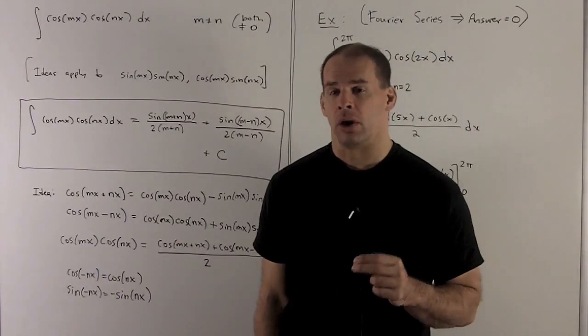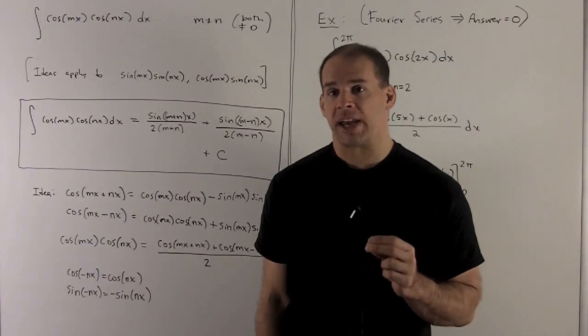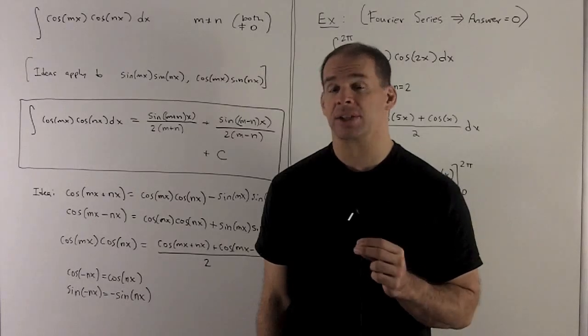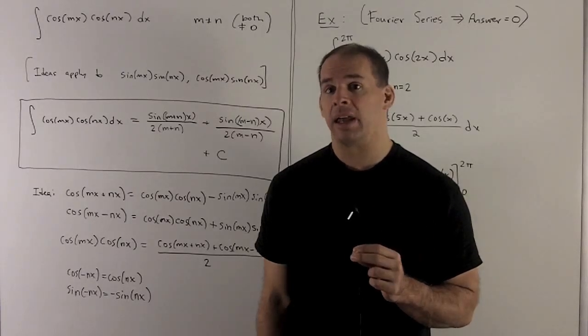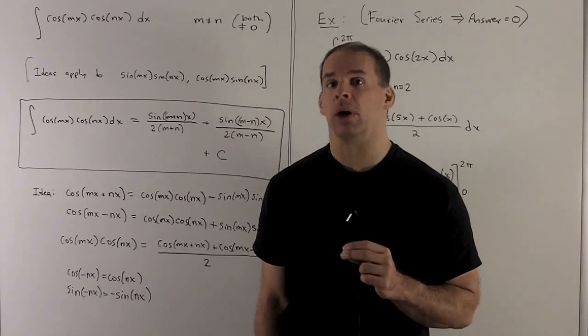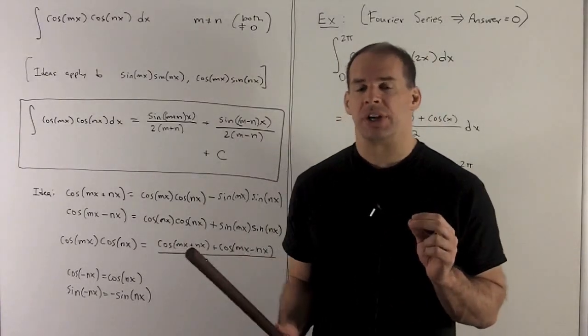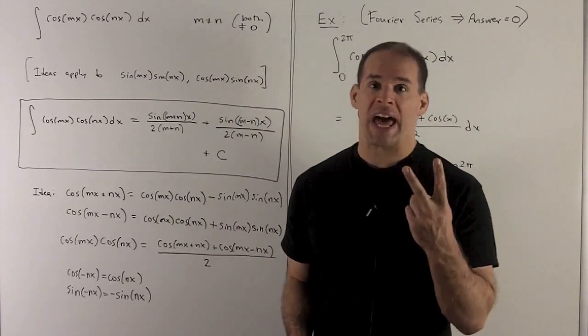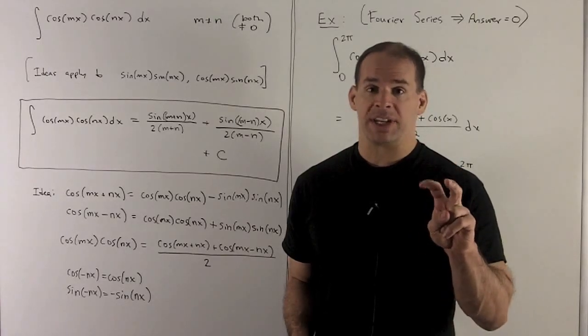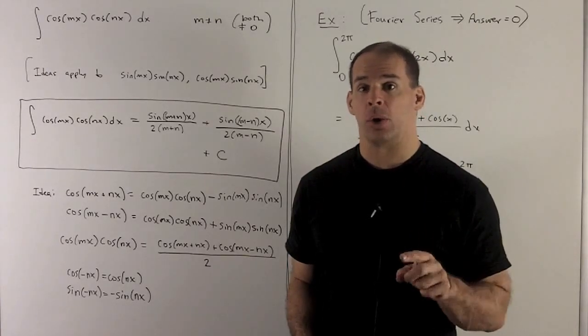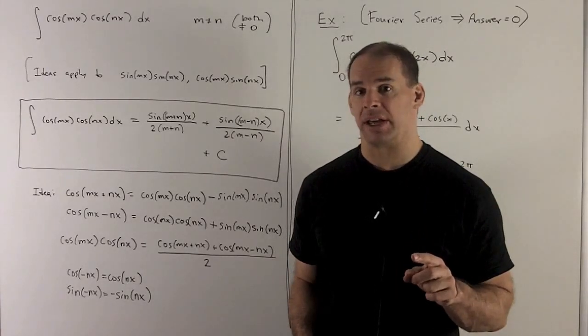What I want to look at now are integrals of the form cosine mx, cosine nx, m is not equal to n, and both are not equal to zero. The ideas we're going to use here are going to apply to a product of two sines with different m's and n's, or a sine and a cosine where we have different m's and n's too.